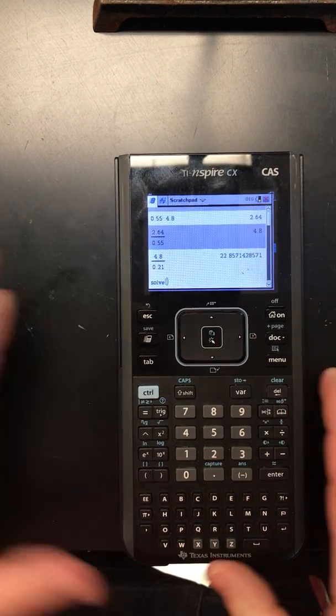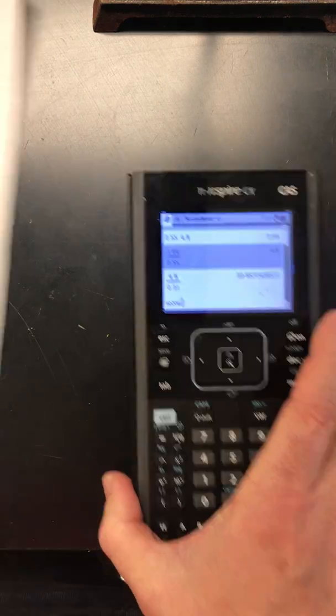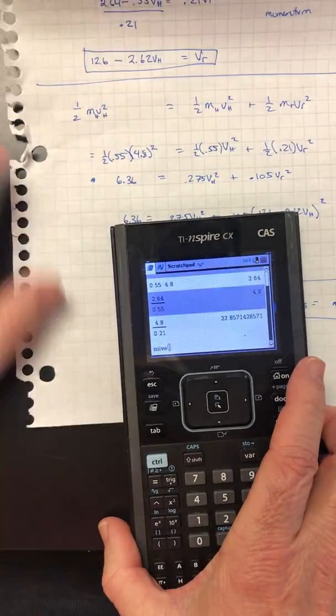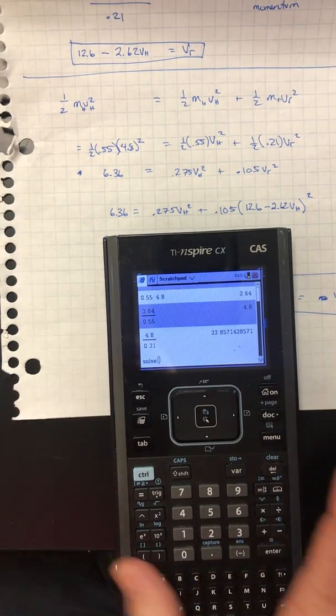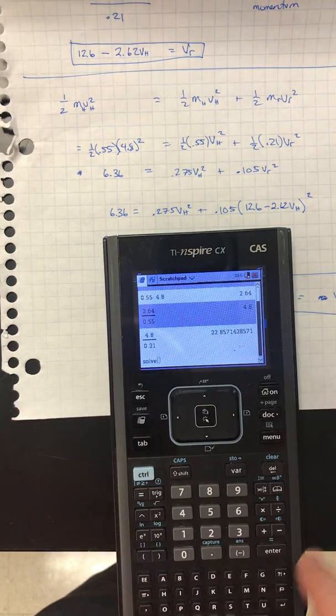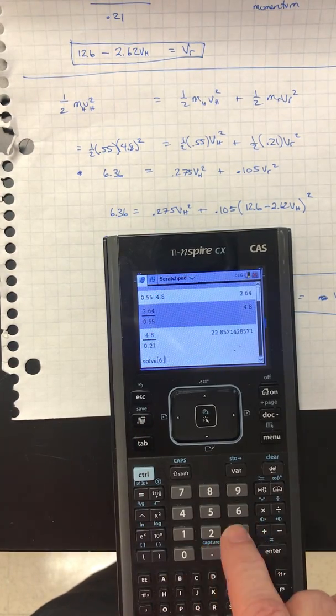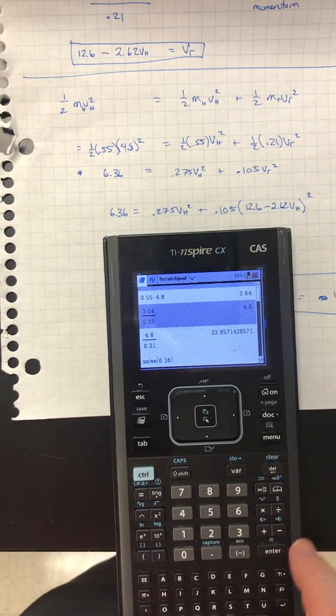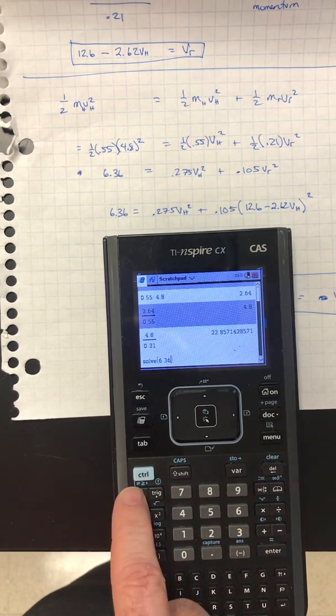So I have Solve, and now I need to type in that equation. Let's see if we can get that equation here. The equation is going to be 6.36 equals - the equals button is here.